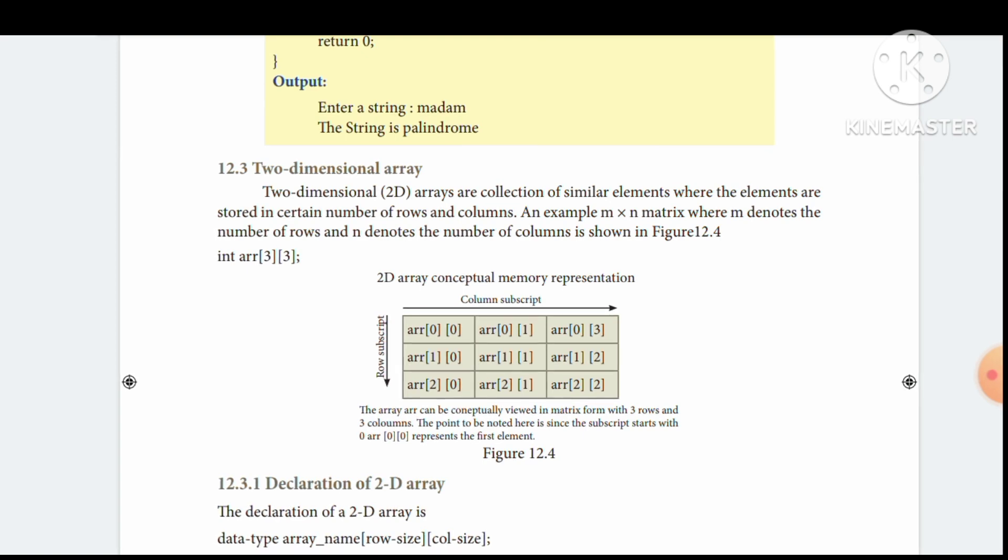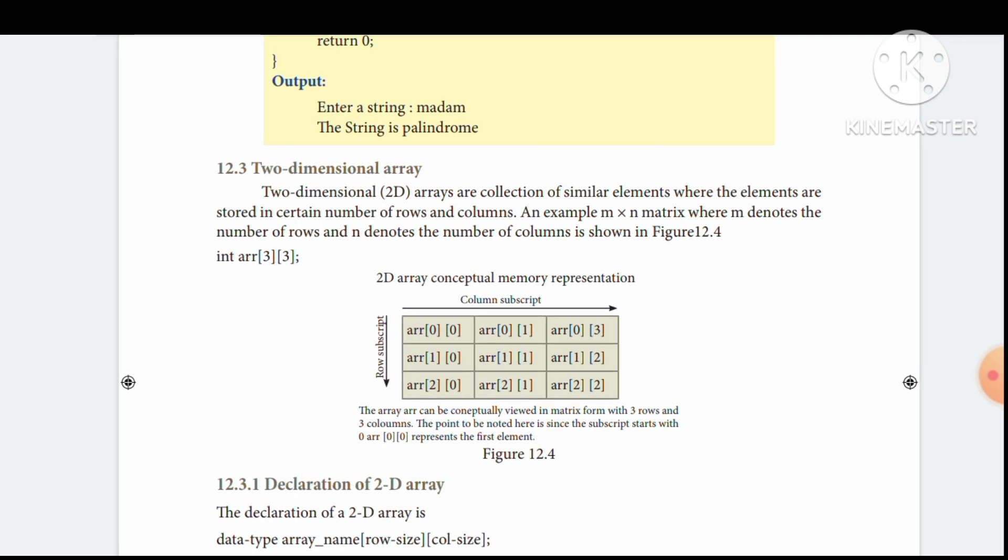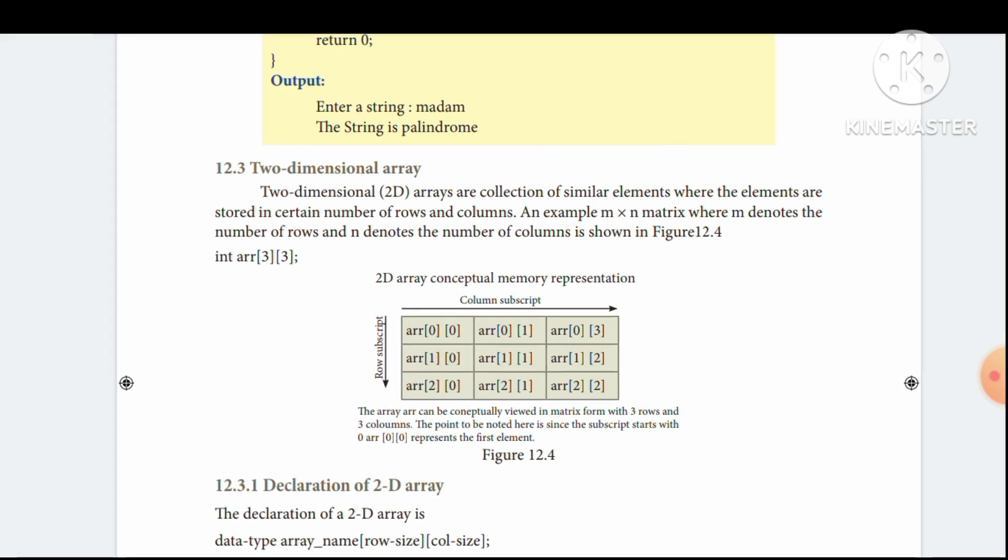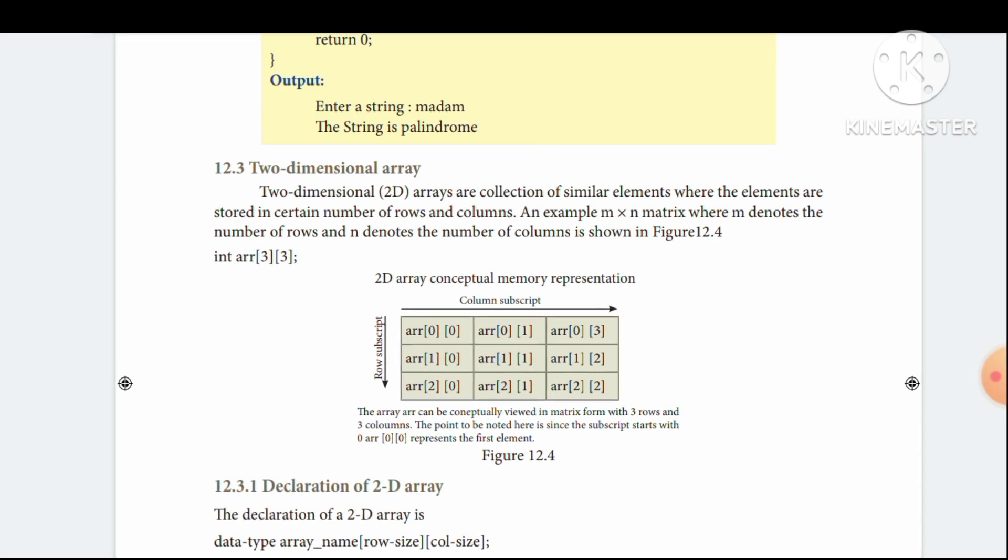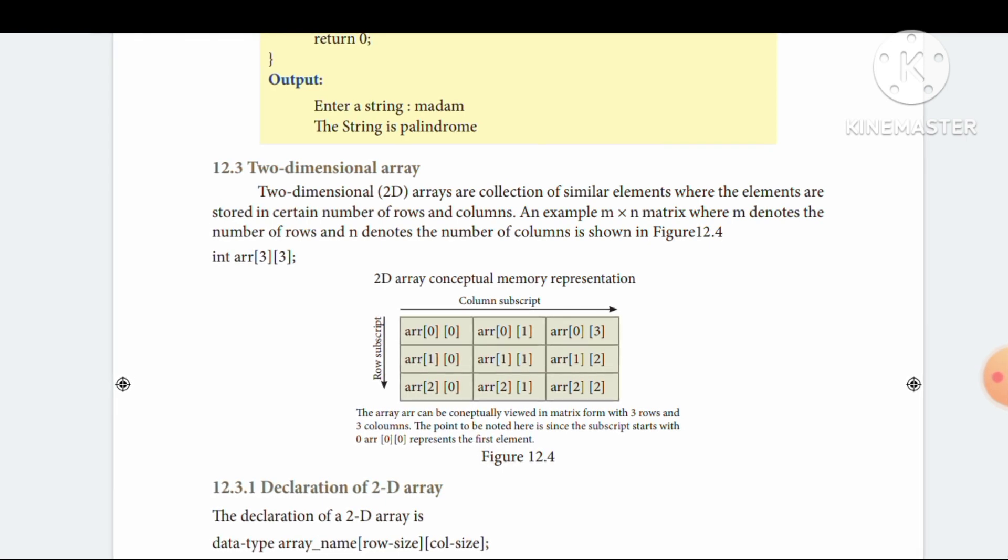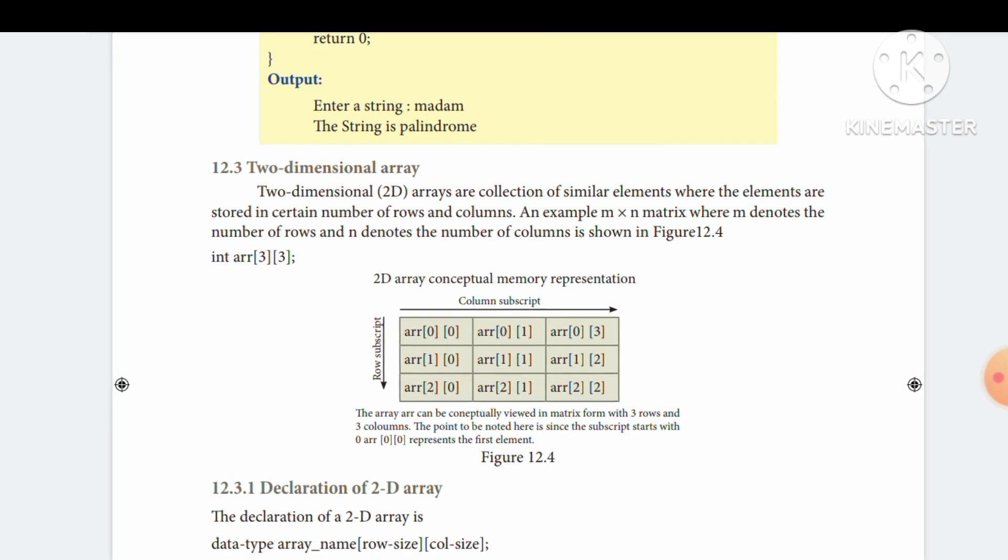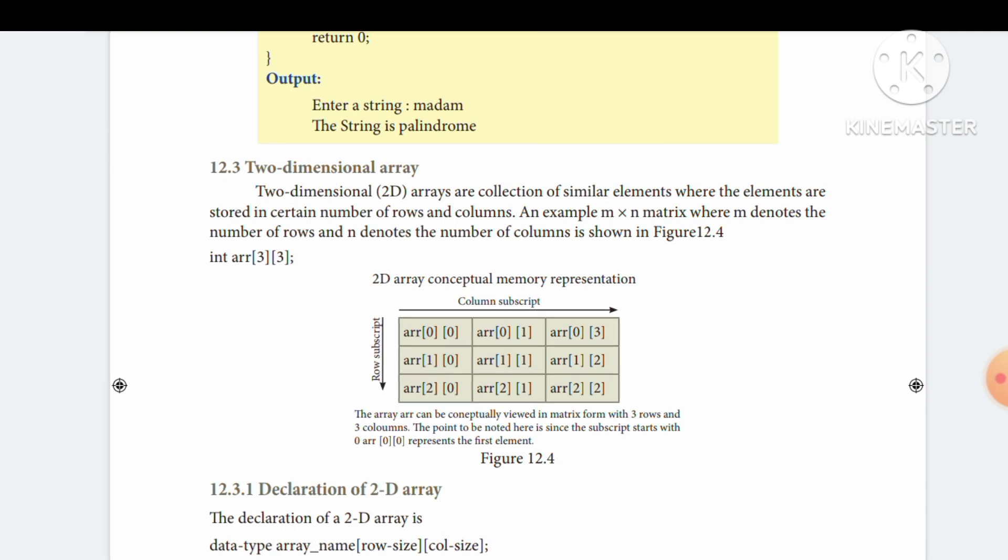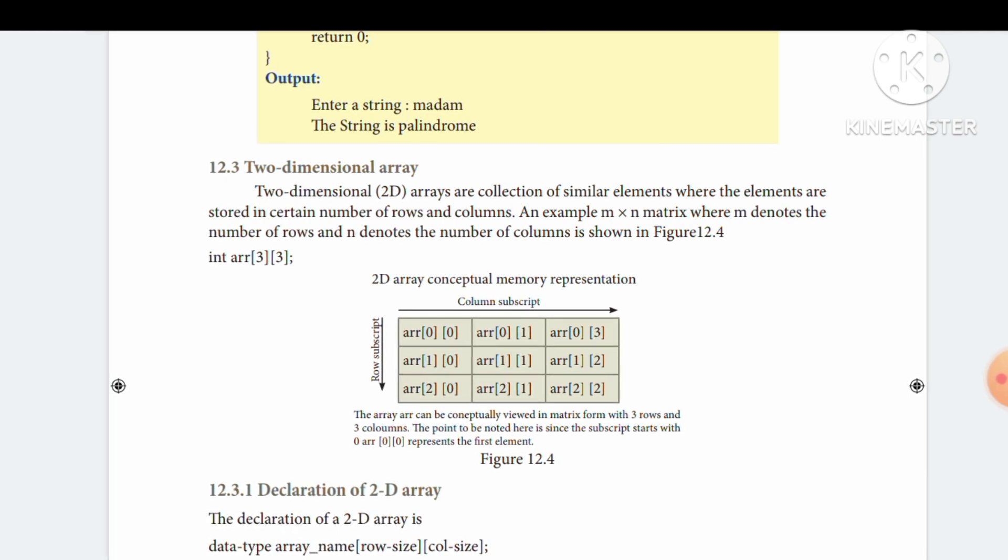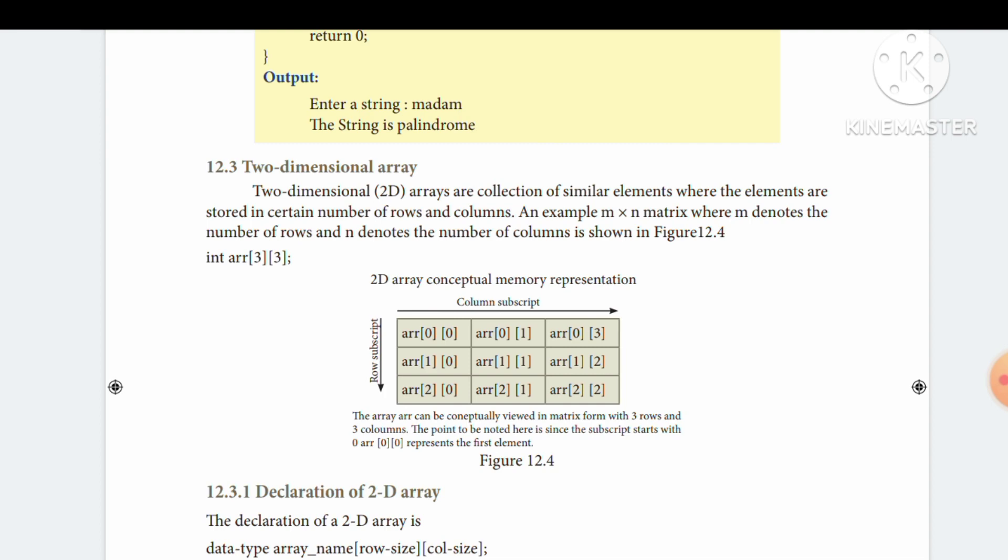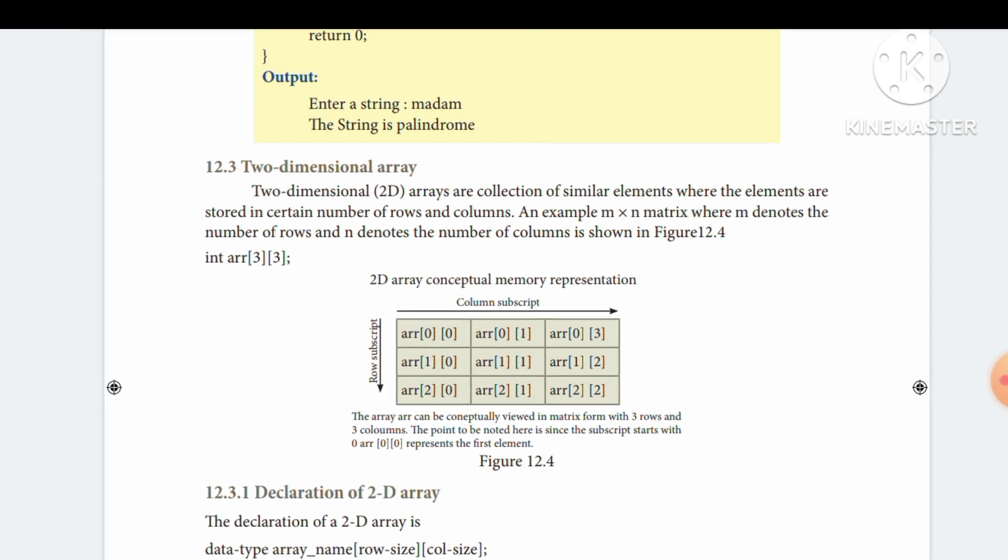For example, we looked at an array of three rows. The first dimension is defined by rows. The second dimension is defined by columns. When accessing rows, the row index is constant. The row index remains the same while we change the column values.